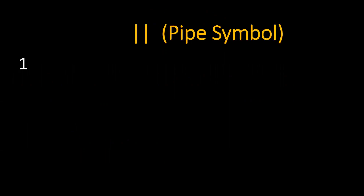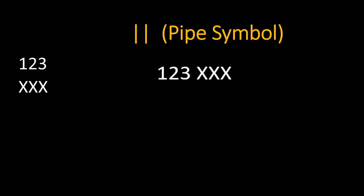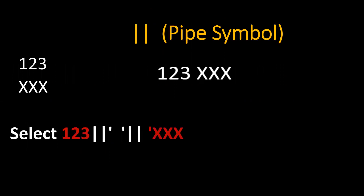Next one is the pipe symbol. The pipe symbol is used to concatenate two strings. Consider '1, 2, 3' as one string and 'XXX' as the other string. To club these two things together, we can use the pipe symbol to achieve that.